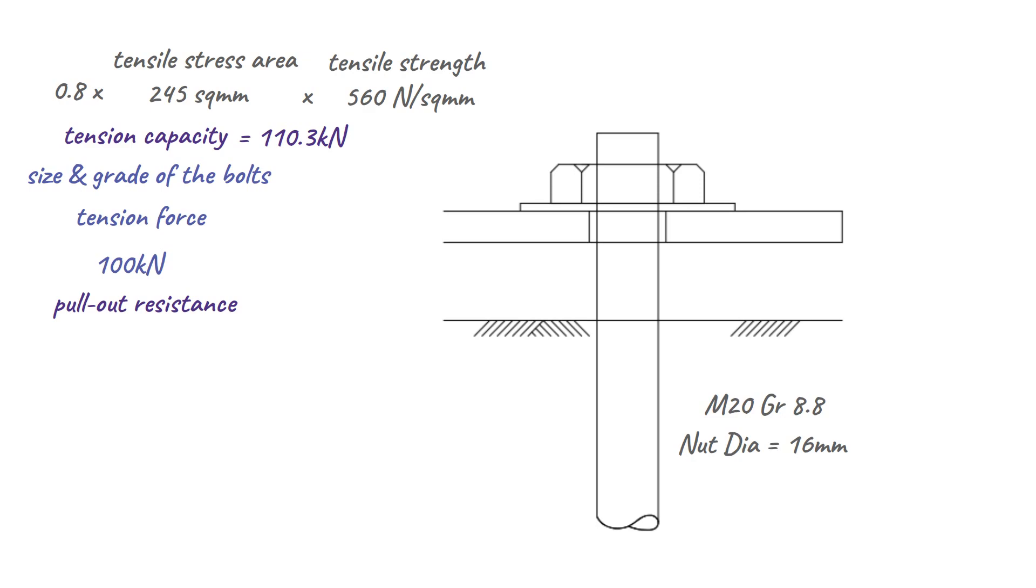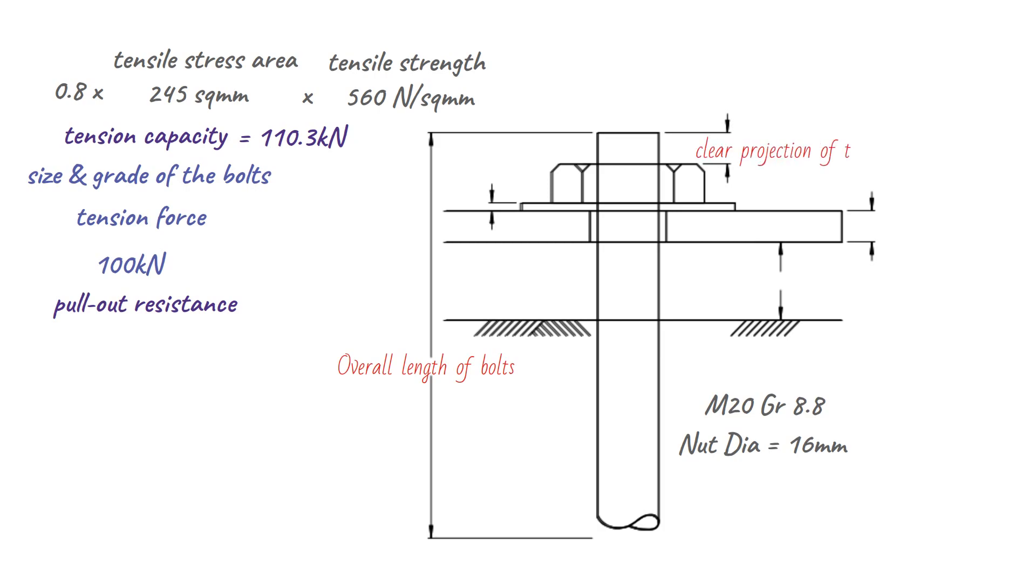To calculate the pull-out resistance of the concrete, we consider the overall length of the bolts, the clear projection of the bolt above the nut, the thickness of the washer, base plate and grout, and the depth of embedment.